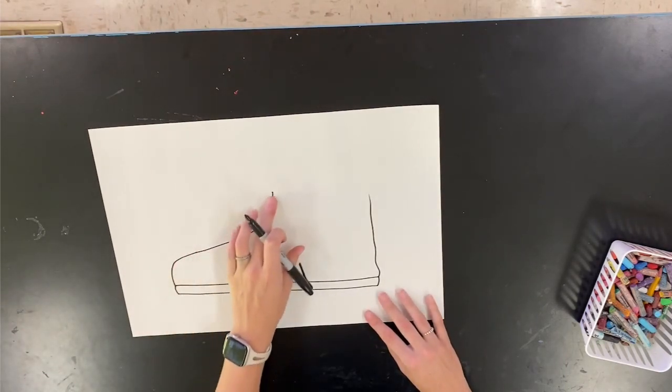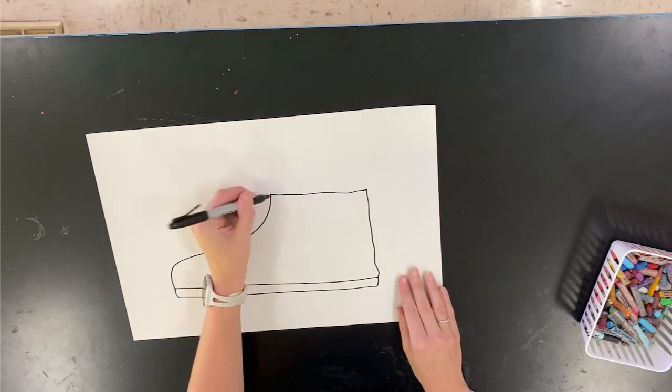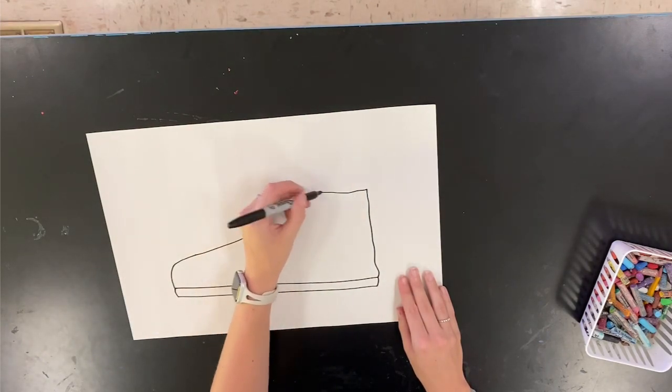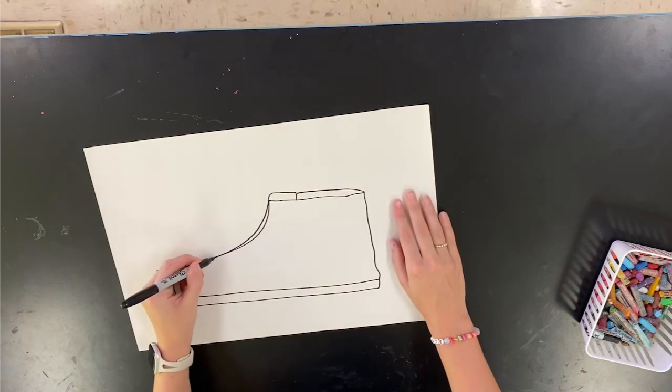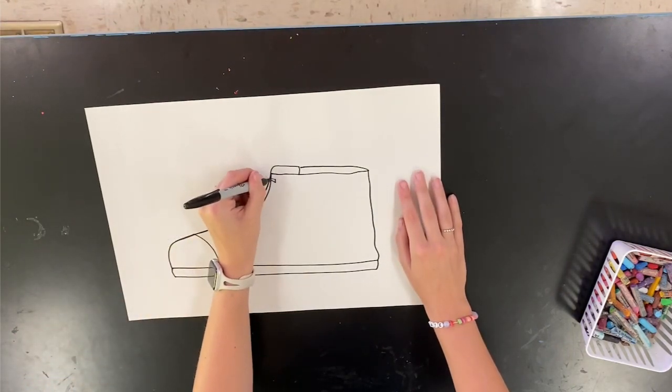I'm going to put a wobbly line on the back, however tall I need that shoe to be. And then round that toe and create a slide all the way up. Add my tongue with a little box shape and then close the back of the shoe.